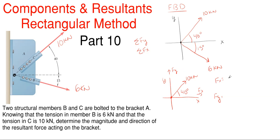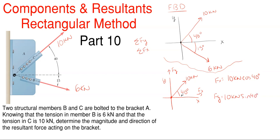Each component will be the force times either the sine or cosine of the angle shown. For the x direction, it is going to be 10 kilonewtons times the cosine of 40 degrees — it is cosine because the angle is measured off of the x, so x is adjacent to that angle, and whenever you're adjacent to the angle you use cosine. For Fy, it will be 10 kilonewtons times sine of 40 degrees, because the y is opposite that angle and anytime you are opposite you use sine.